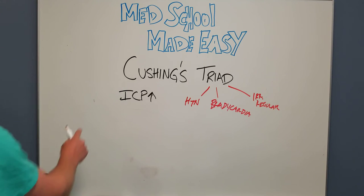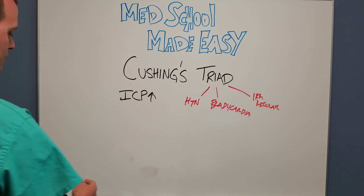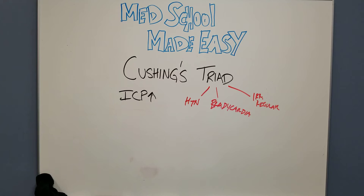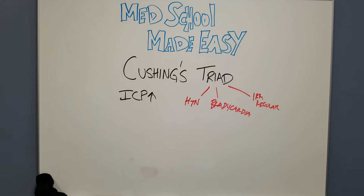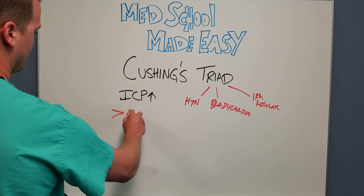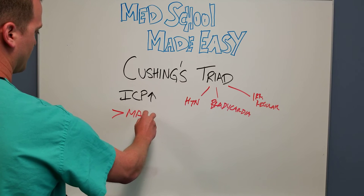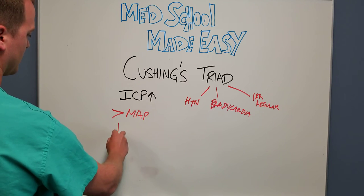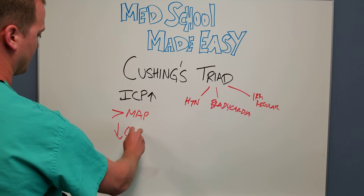When the ICP goes up inside the brain, because of the Monroe-Kelly doctrine — which is about the spaces in your head and the relative pressures — there's only a certain amount of give before the cranium becomes confining and the increased intracranial pressure gets too high. It overcomes and gets greater than your mean arterial pressure, your MAP. This leads to a decreased cerebral perfusion pressure.